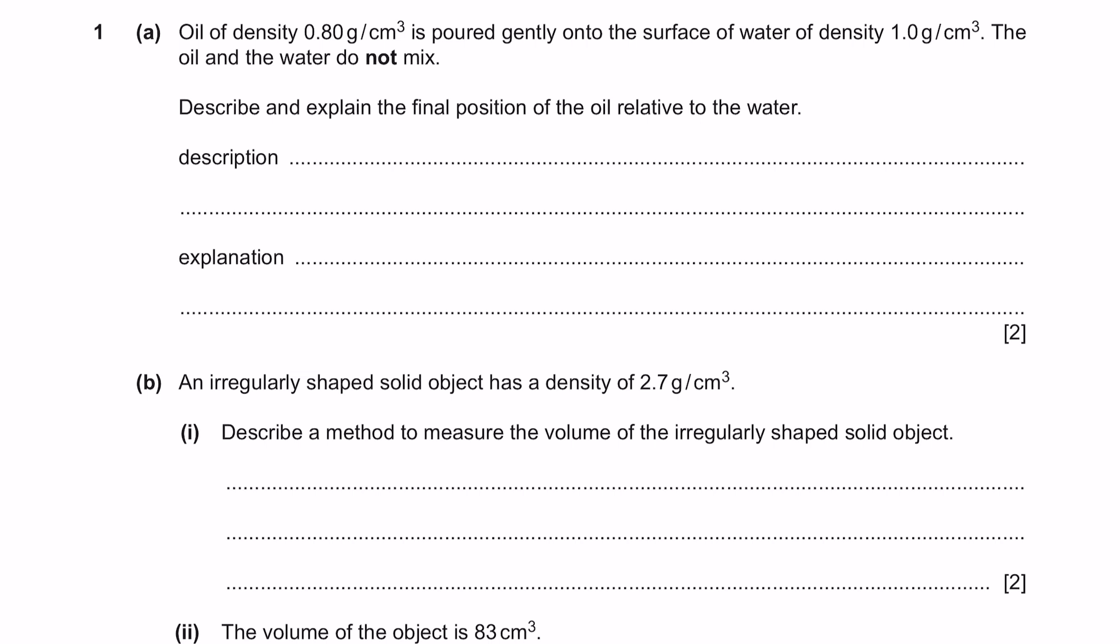Question 1, Part E. Oil of density 0.8 grams per centimeter cube is poured gently onto the surface of water of density 1 gram per centimeter cube. The oil and water do not mix. Describe and explain the final position of the oil relative to the water.